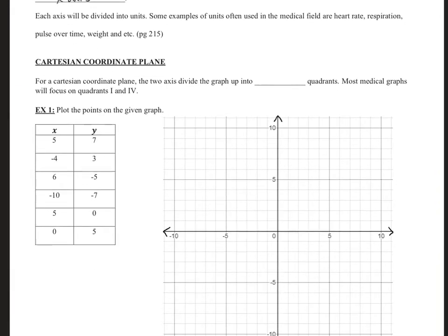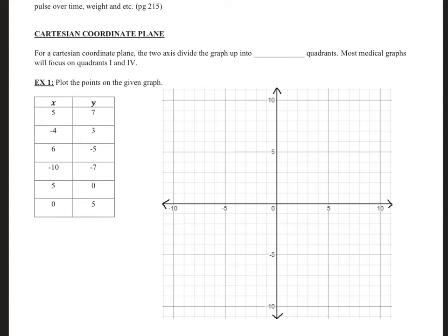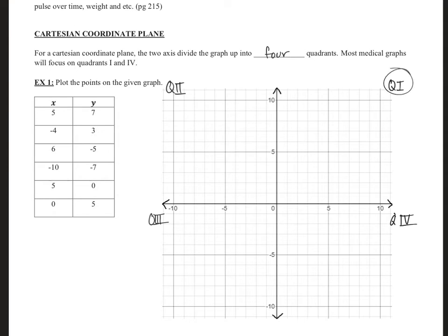One of the main things we look at for graphing is something called the Cartesian coordinate plane, named after René Descartes, the French mathematician. For a Cartesian coordinate plane, the two axes divide the graph up into four quadrants. Most medical graphs will focus on quadrants one and four. The quadrants are: quadrant one, quadrant two, quadrant three, and quadrant four — they go in a kind of strange order, but that is how it is.